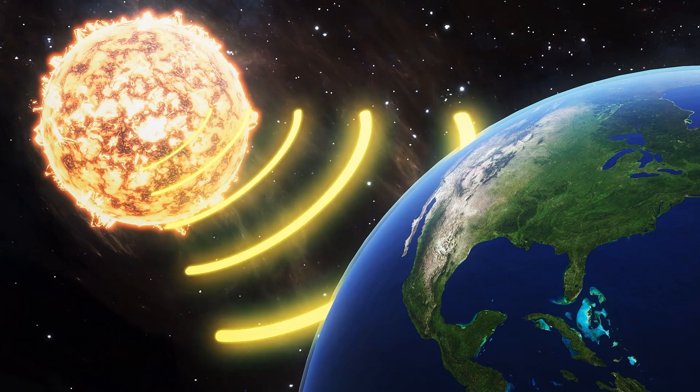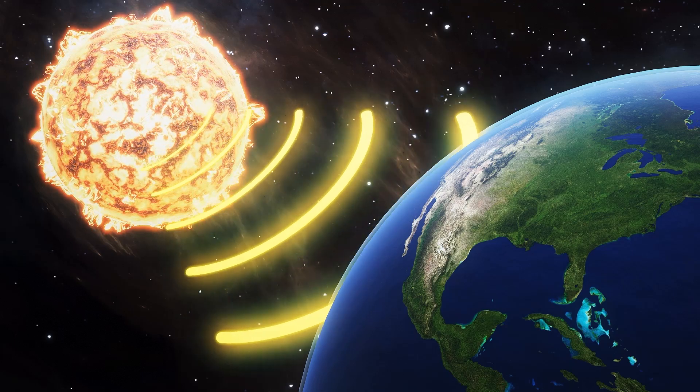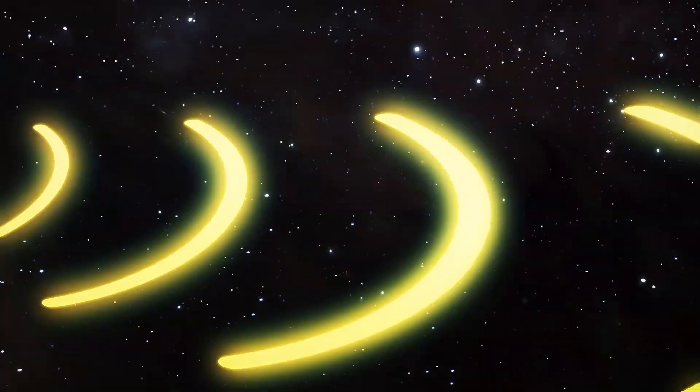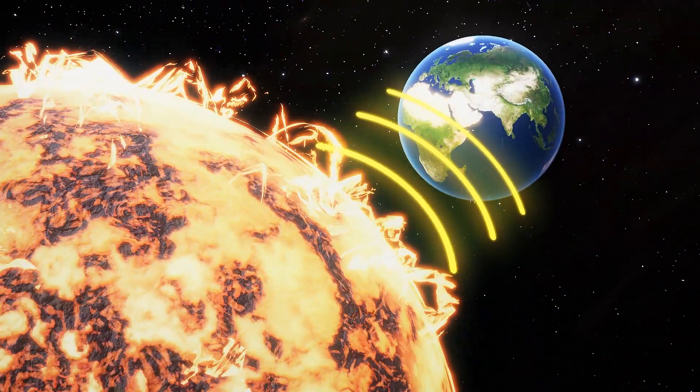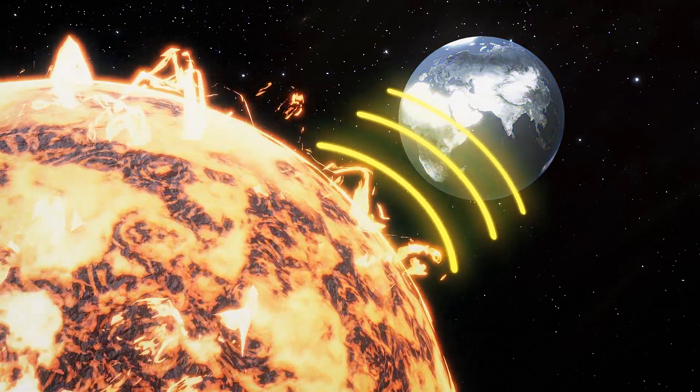In around a billion years, increases in the Sun's energy output will ensure oxygen levels on Earth drop to levels that cannot sustain complex life, according to a study in Nature Geoscience.